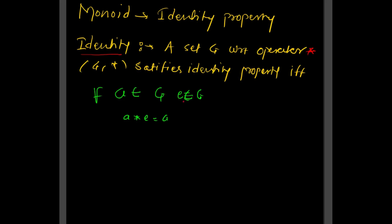There exists an element 'e' called the identity element, where 'e' also belongs to set G, and the operation a star e gives you the same element 'a'. The identity element is that element on which performing the operation gives you the same element back. Any element operated with 'e' will produce the same element.